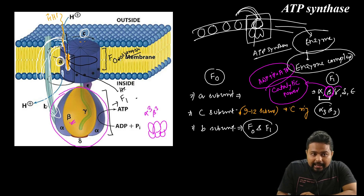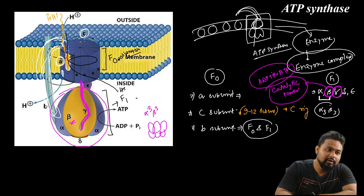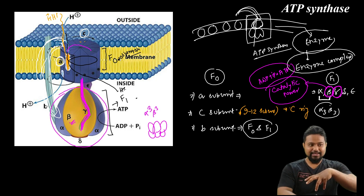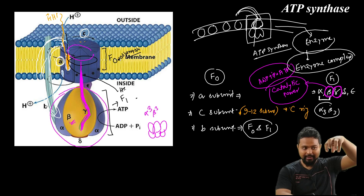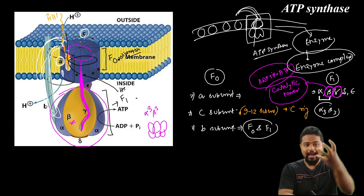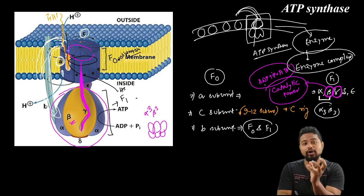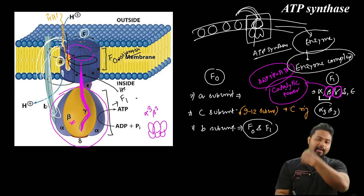The gamma subunit is the stalk — it is connected to the C ring and forms the rotor. When the C ring rotates, gamma rotates along with it. This rotation of gamma causes conformational changes in the beta subunit, which helps in ATP synthesis. This will be covered in detail in the next class on Boyer's Conformational Model.